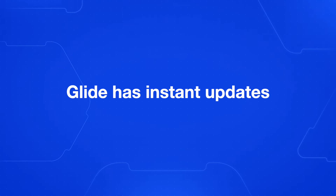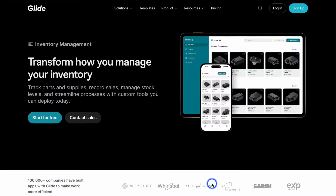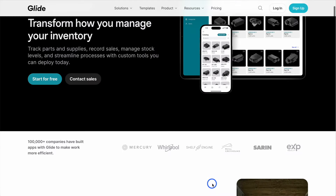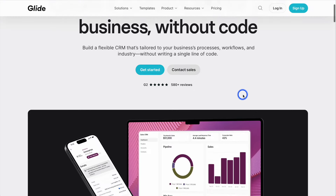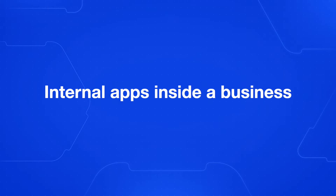Glide also has instant updates, similar to Bubble — when your database or Google Sheet updates, the app can update as well. Glide apps are really powerful, so you can create things like task managers, inventory systems, and customer databases all from a spreadsheet or a database. Glide is better for simple prototypes or internal apps that you're going to use inside of the business.